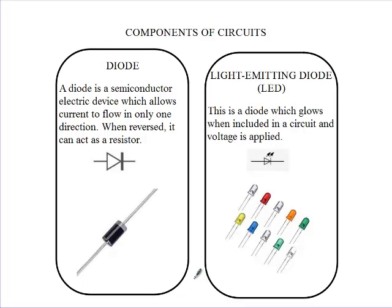Resistance is provided by a resistor, and there are different forms of resistors. We can talk of the fixed resistor, the variable resistor, the light dependent resistor, and thermistor, just to mention a few.